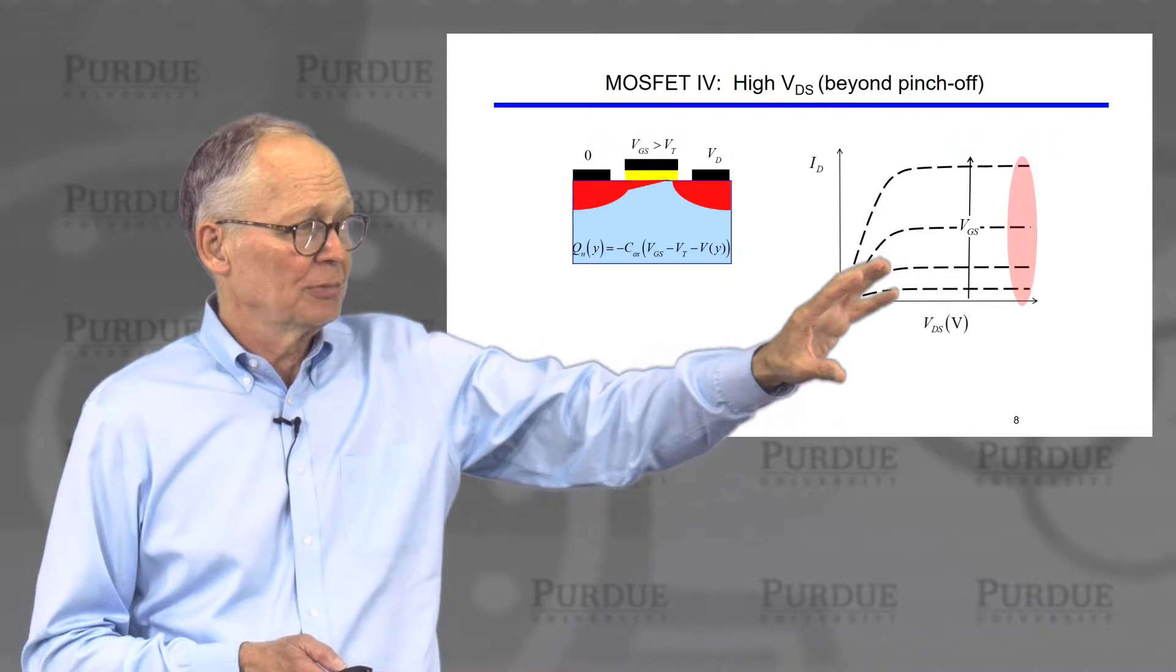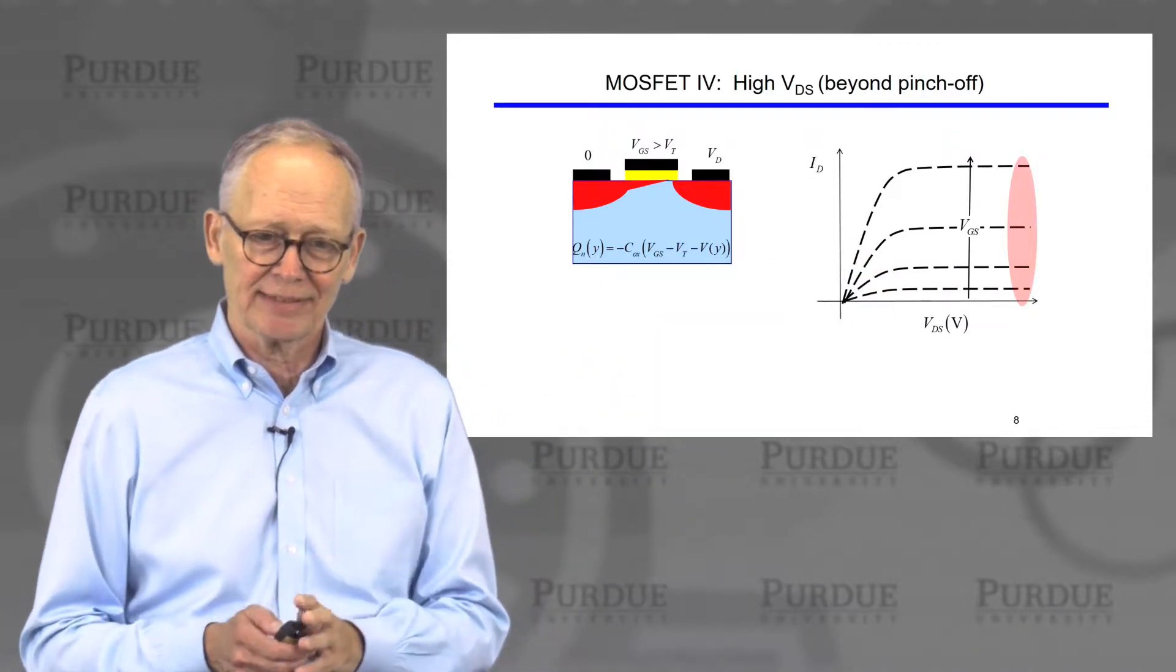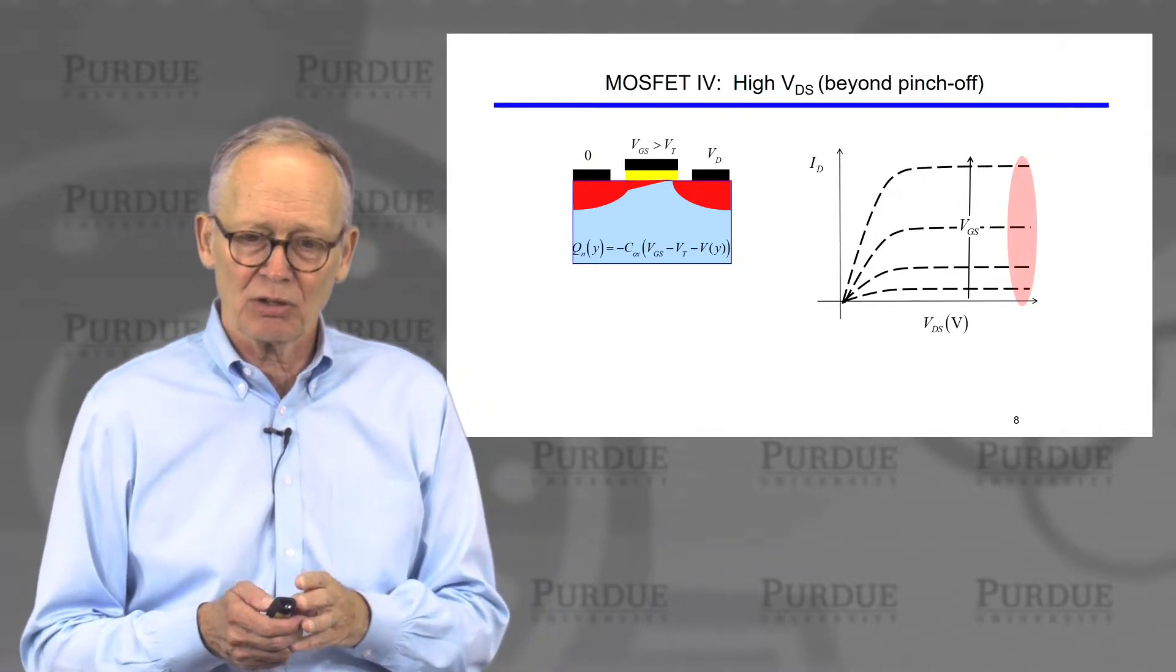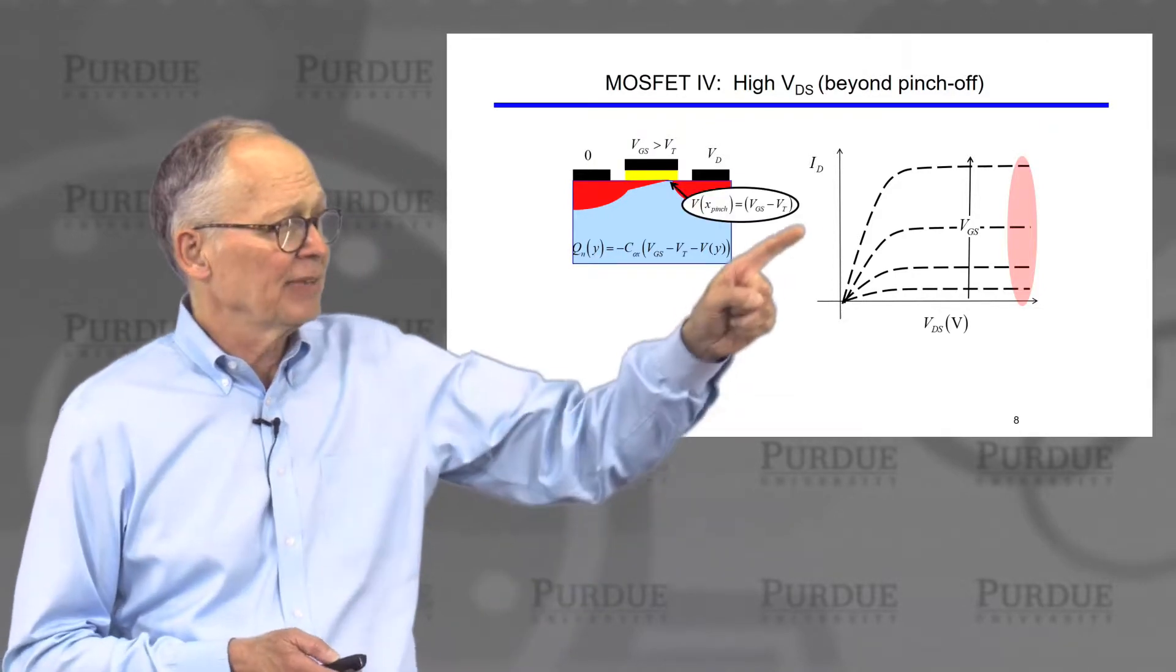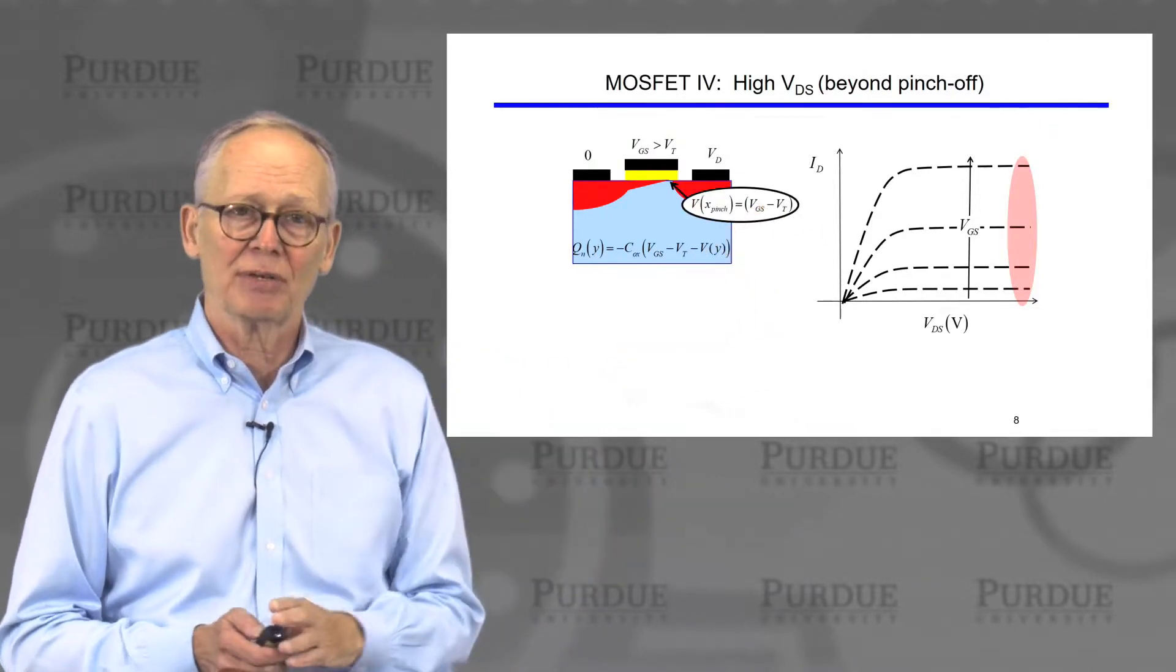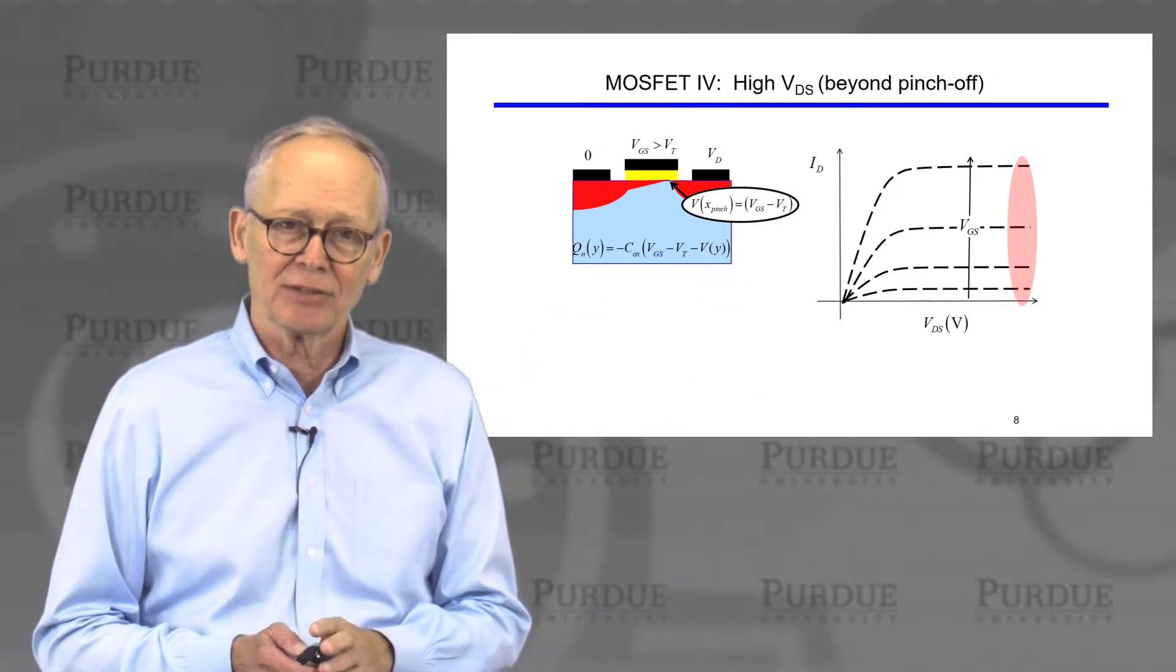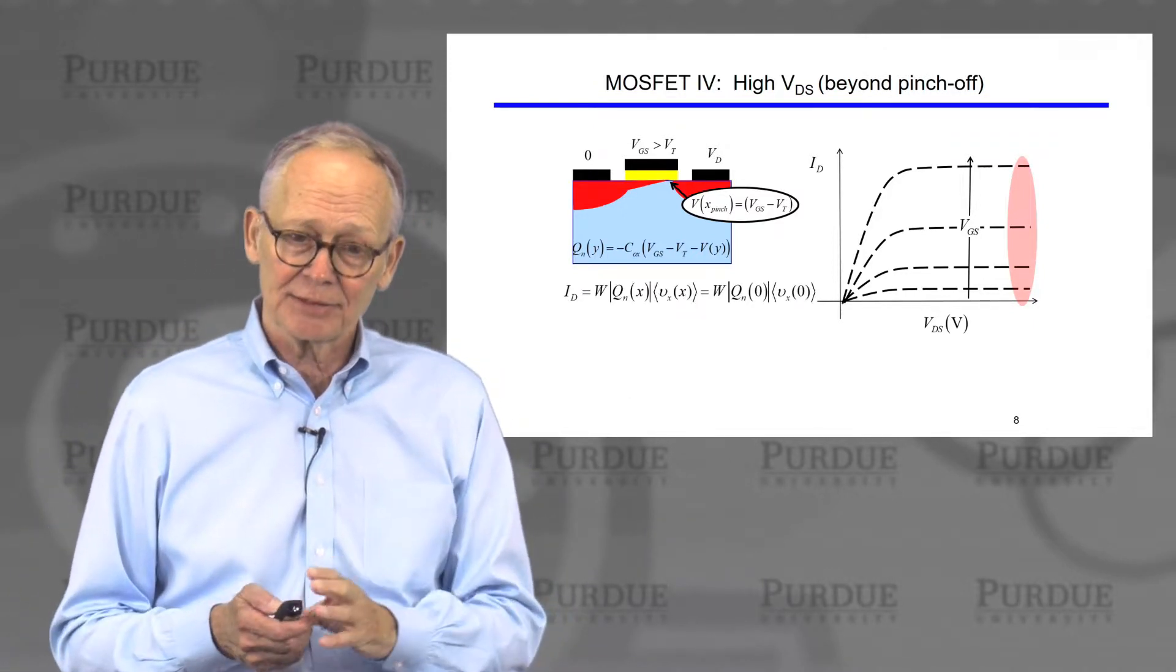We also looked at the high voltage regime. In the high drain voltage regime, we considered two cases: a long channel device, which behaves as square law devices, and a short channel device. In the long channel device, something called velocity pinch-off occurs. The mobile charge goes approximately to zero when we hit the pinch-off point. The current doesn't stop flowing, but it saturates.